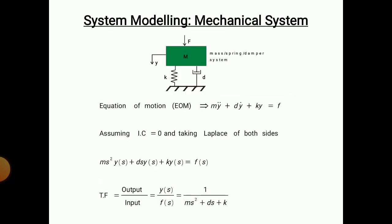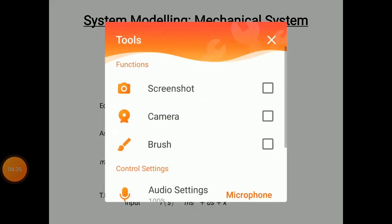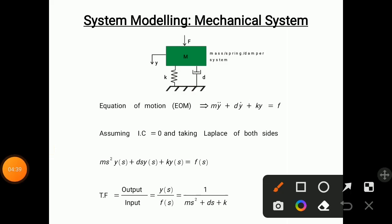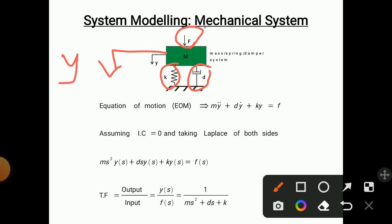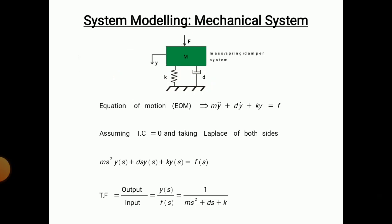Let us take an example of a mechanical system — a spring-mass-damper system. The green colored part is the mass. To that mass a spring is attached with stiffness k, and a damper with damping coefficient d is also attached. A force is applied to this mass, and the resulting displacement is y. The equation of motion is: m·ÿ + d·ẏ + k·y = F.